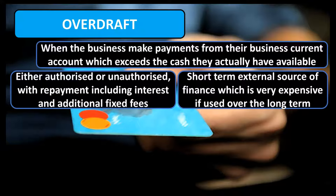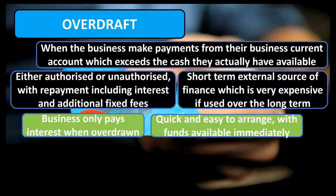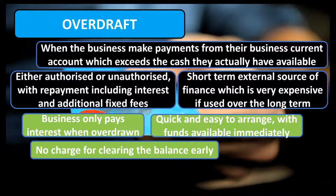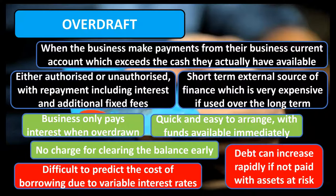Some of the key advantages of the bank overdraft include: the business only pays interest when it's overdrawn; it is quick and easy to arrange and funds are available immediately after it's been set up; and unlike other sources of finance, there is typically no charge for clearing the balance earlier than expected. However, the disadvantages include that interest rates vary, making it difficult for the business to accurately predict the cost of borrowing. Not repaying the overdraft can have serious consequences as interest will keep adding to the total amount repayable. Also, the business may lose assets in the process, whilst directors of the company can also be personally liable depending on the overdraft agreement.